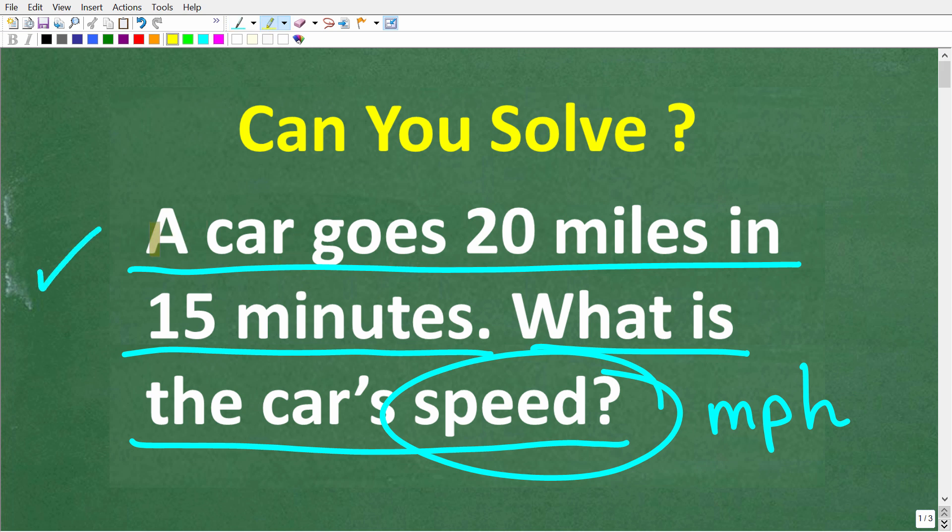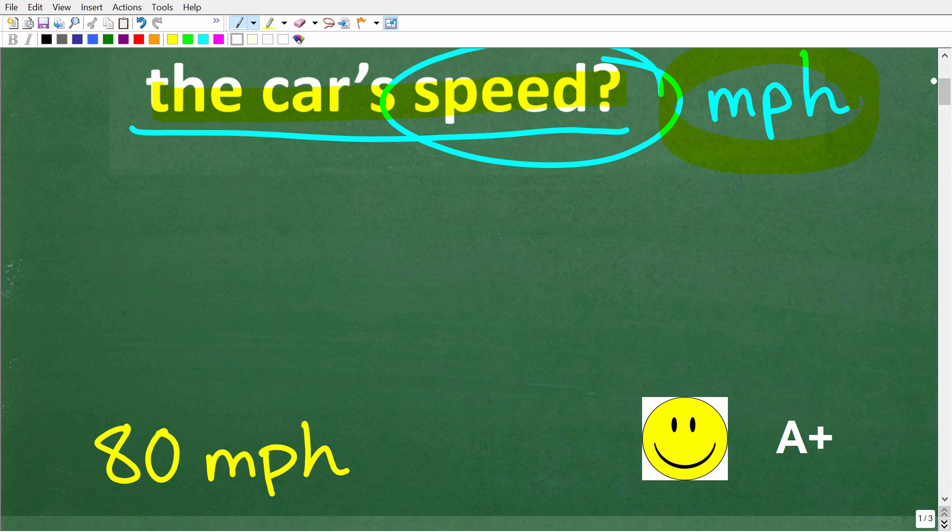All right, so one more time, a car goes 20 miles in 15 minutes. What is the car speed in terms of miles per hour? All right, so let's take a look at the answer. The correct solution here is 80 miles per hour.